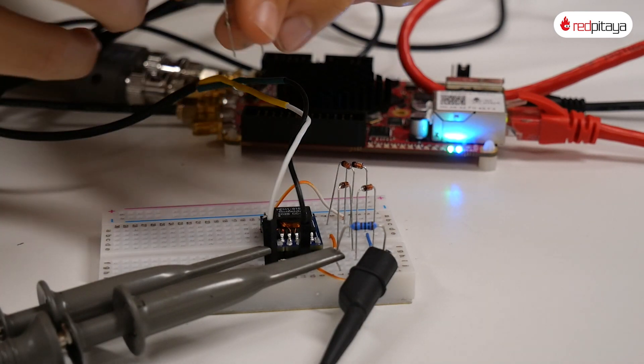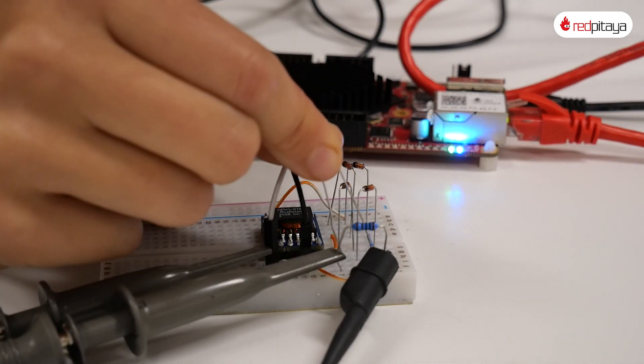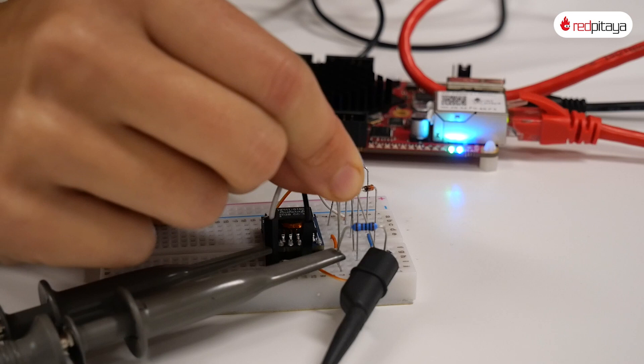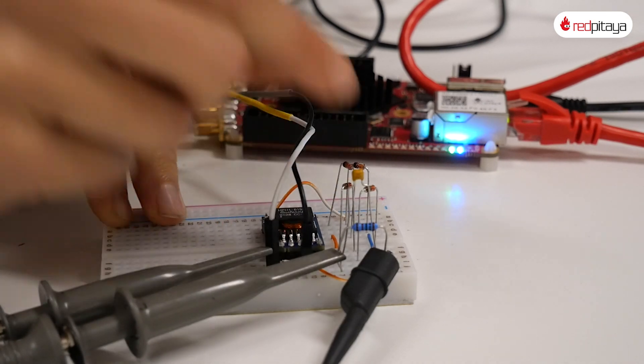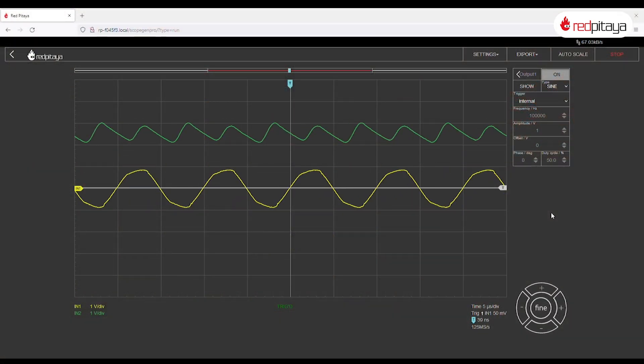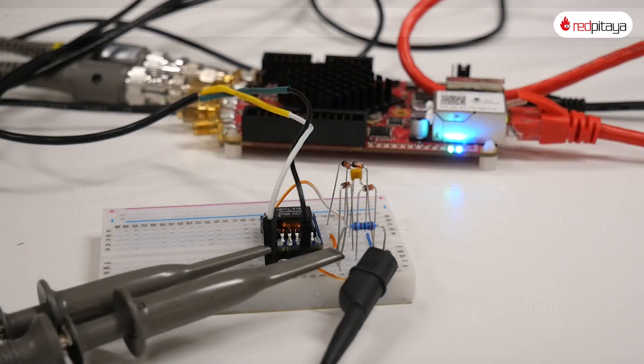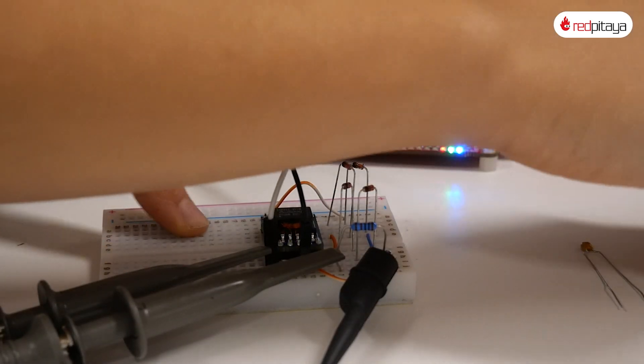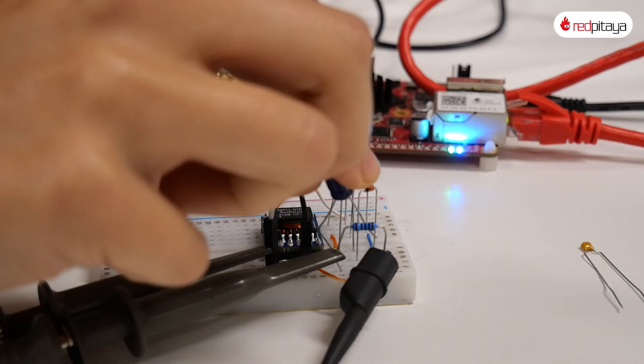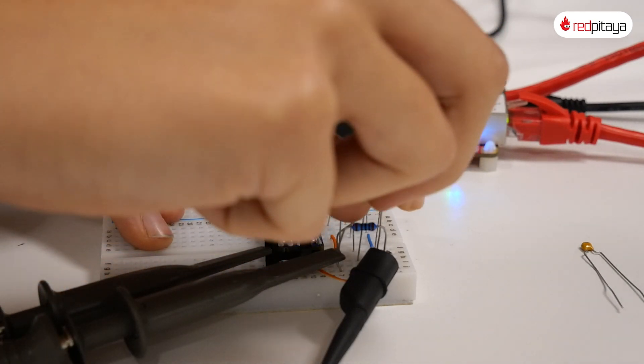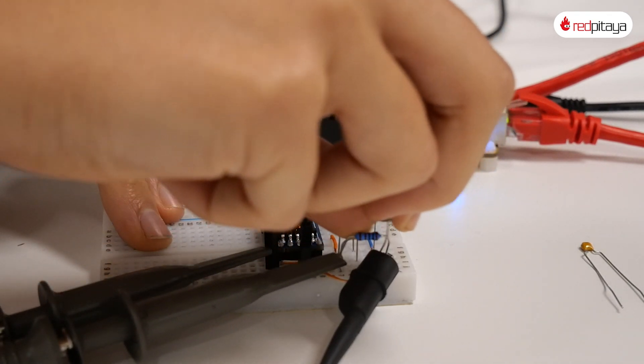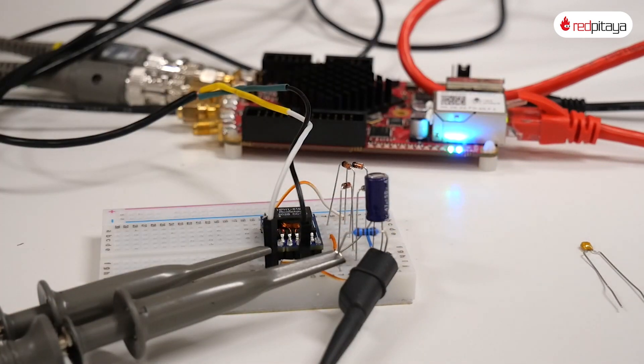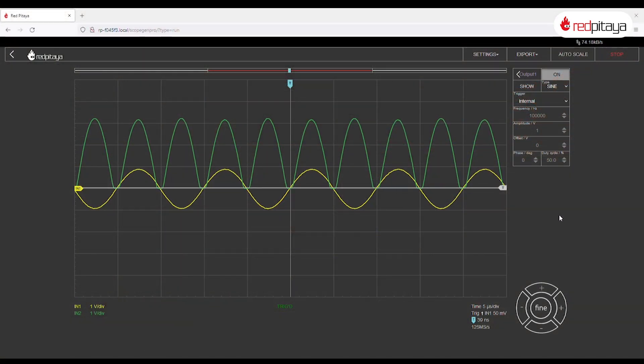Let's also smooth out the voltage by adding a smoothing capacitor to the output. This is with a 10 nF capacitor. And this with a 47 µF capacitor.